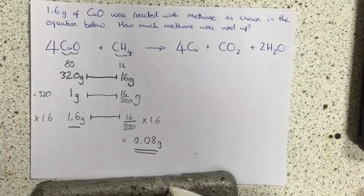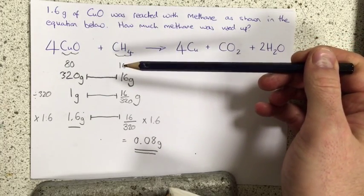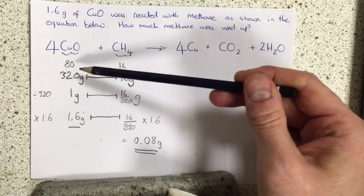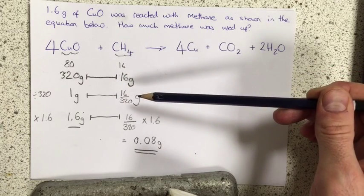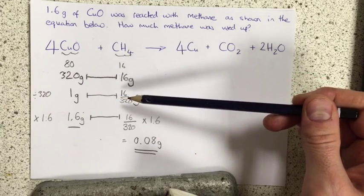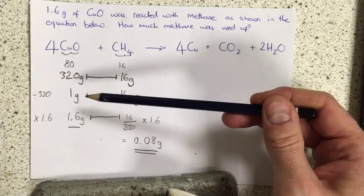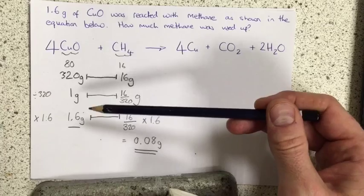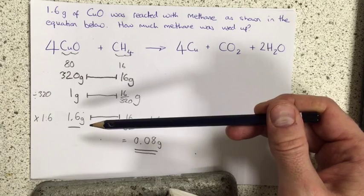So I'll just run through the steps again one more time. The first thing we did was to use the MRs and the numbers in the equation to find out what mass of copper oxide would react with what mass of methane. The second step was to then divide through by 320 so that we could find out what mass of methane would react with one gram of copper oxide. And then we multiplied by 1.6 to find out what mass of methane we need to react with 1.6 grams of copper oxide.